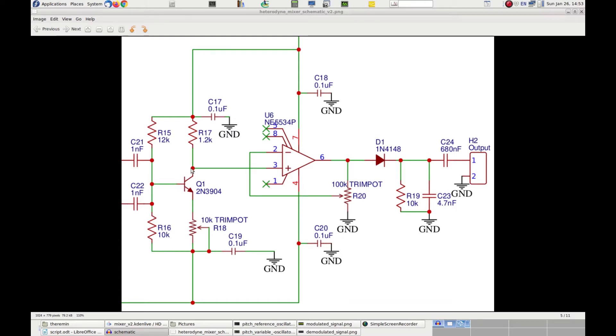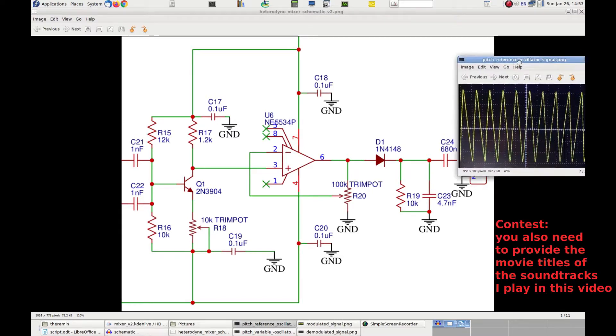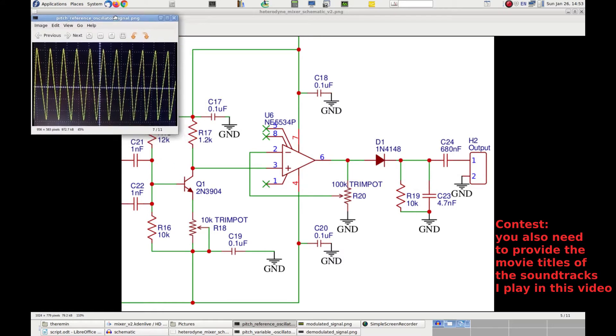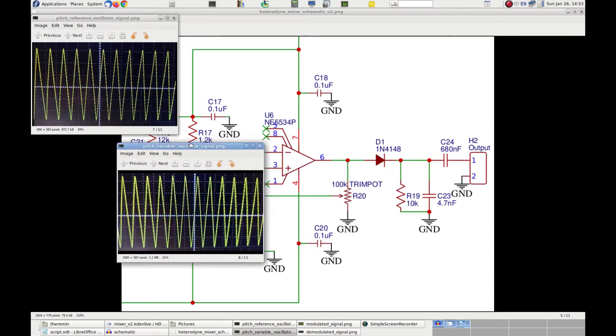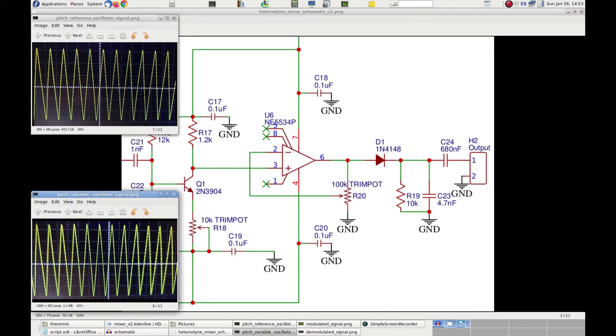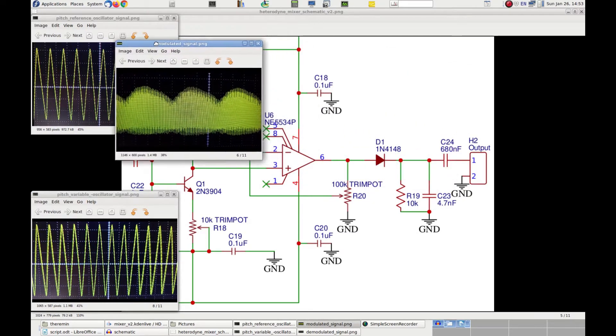This output signal is available at the collector of transistor Q1. To better understand this concept, let's take a look at the signals themselves. Here is the signal coming from the pitch reference oscillator, here is the signal coming from the pitch variable oscillator, and here is the resulting signal at the collector of Q1.